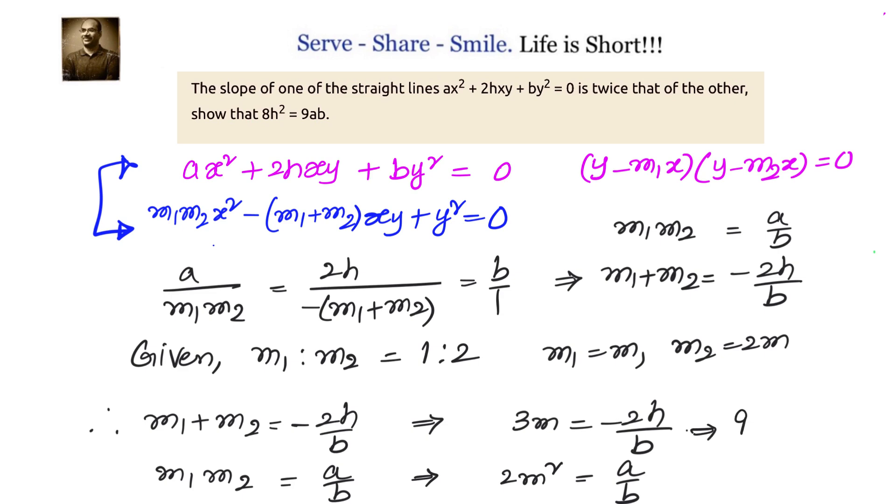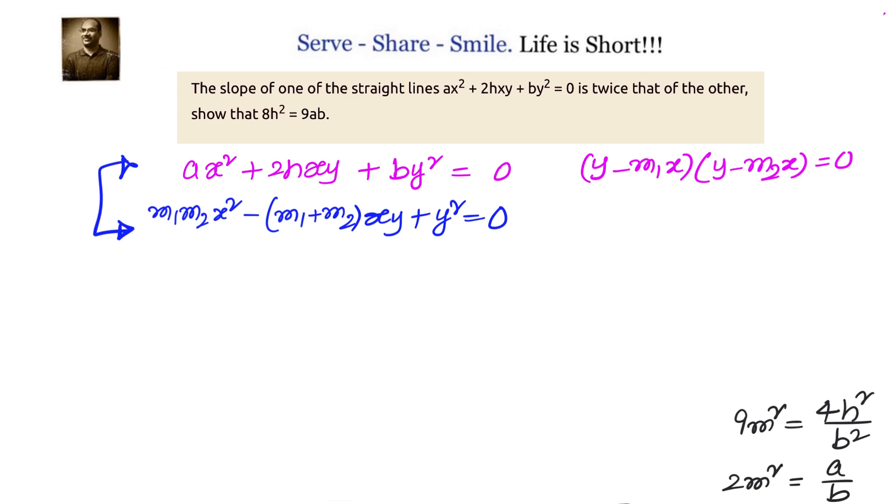Now, let us try to obtain M² value from both of them and equate them. For that, first let us square the first equation. We will get 9M² = 4H²/B². From the second equation, we know 2M² = A/B. We can divide equation 1 by equation 2 so that M² will cancel out.